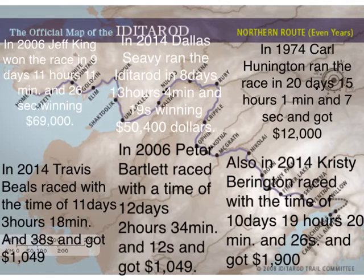In 2014, Travis Beals raced with a time of 11 days, 3 hours, 18 minutes, and 38 seconds, and got $1,049.